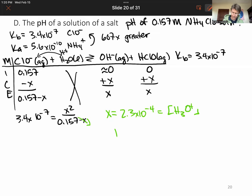And that means that our pOH is going to be the negative log of that, 3.64. And our pH, which is 14 minus pOH, is 10.36. So fairly basic for this problem.